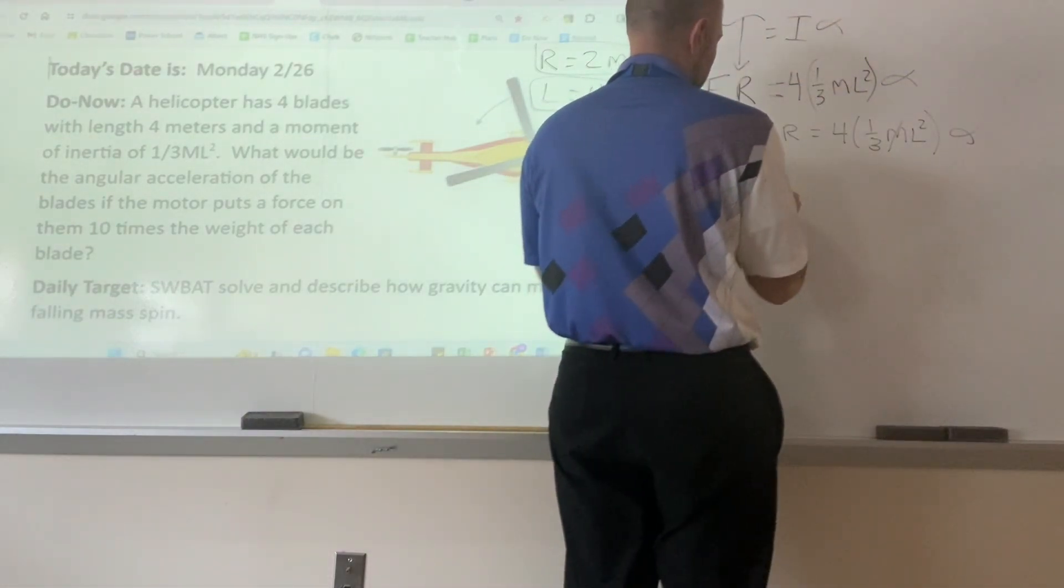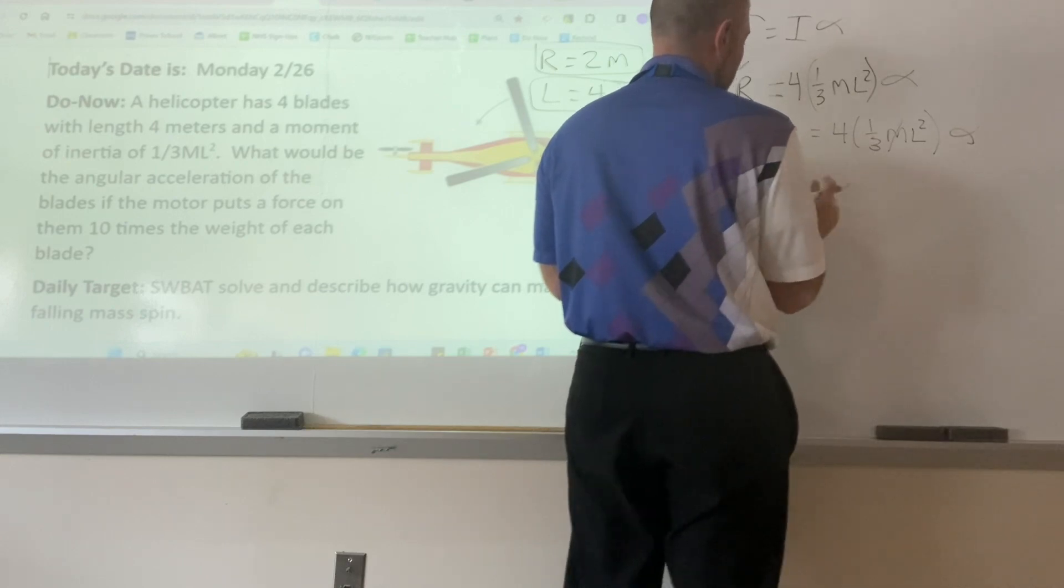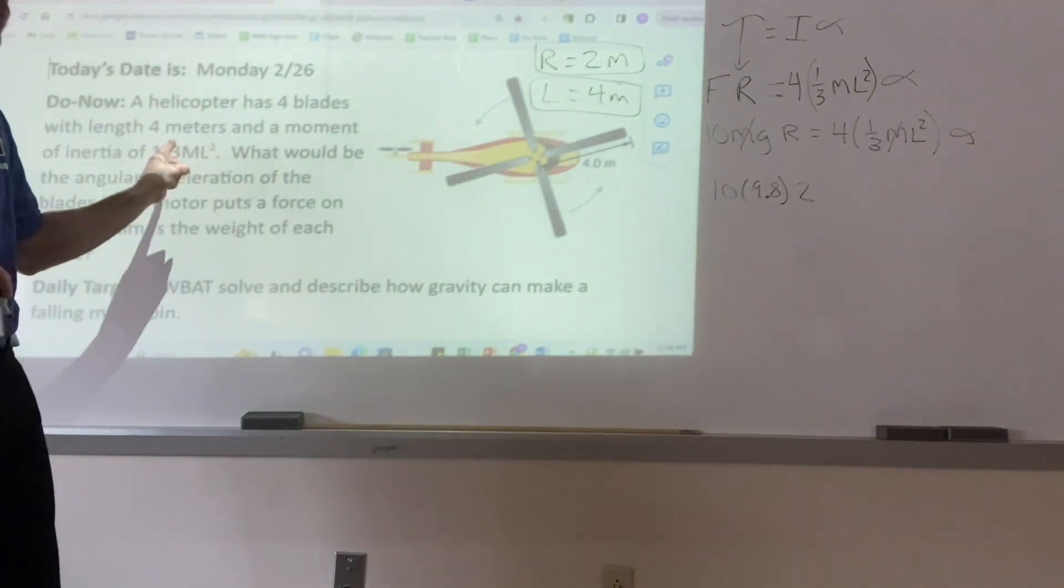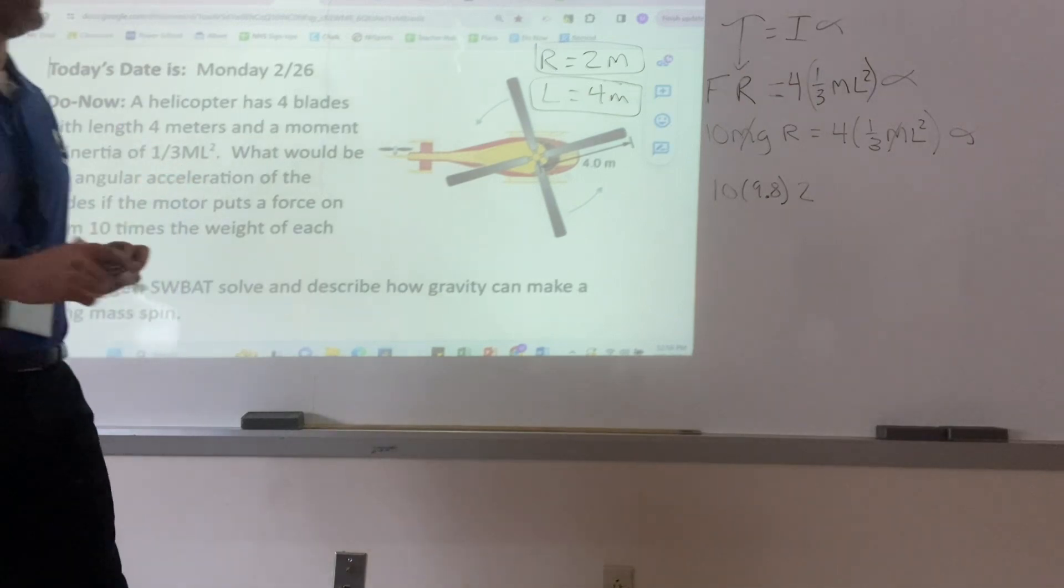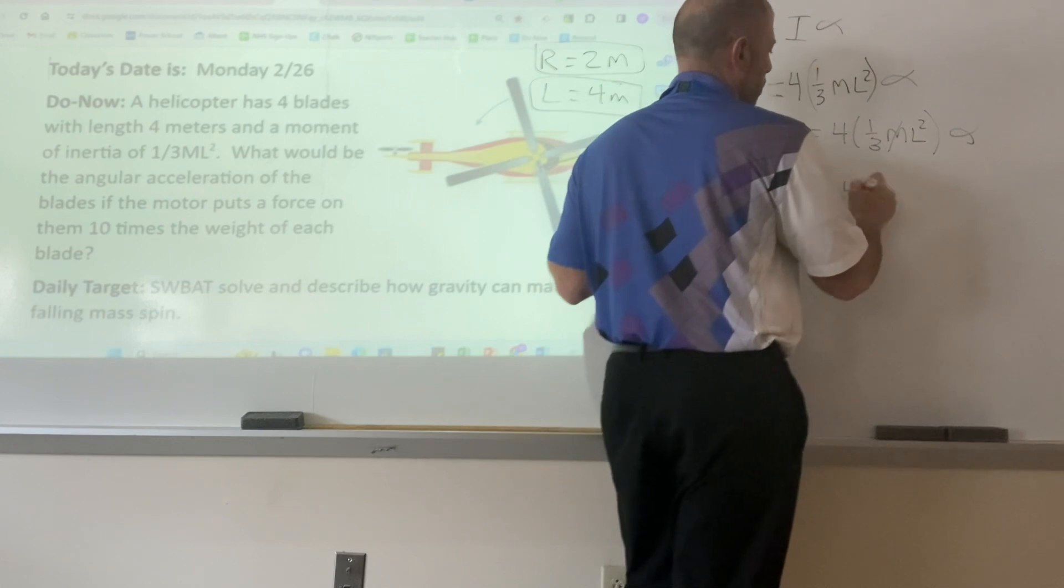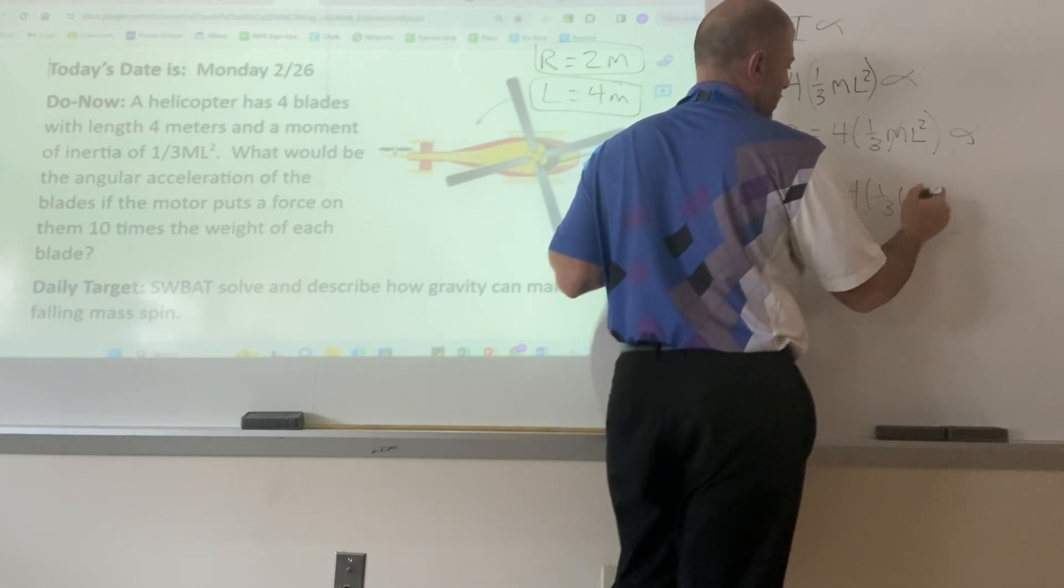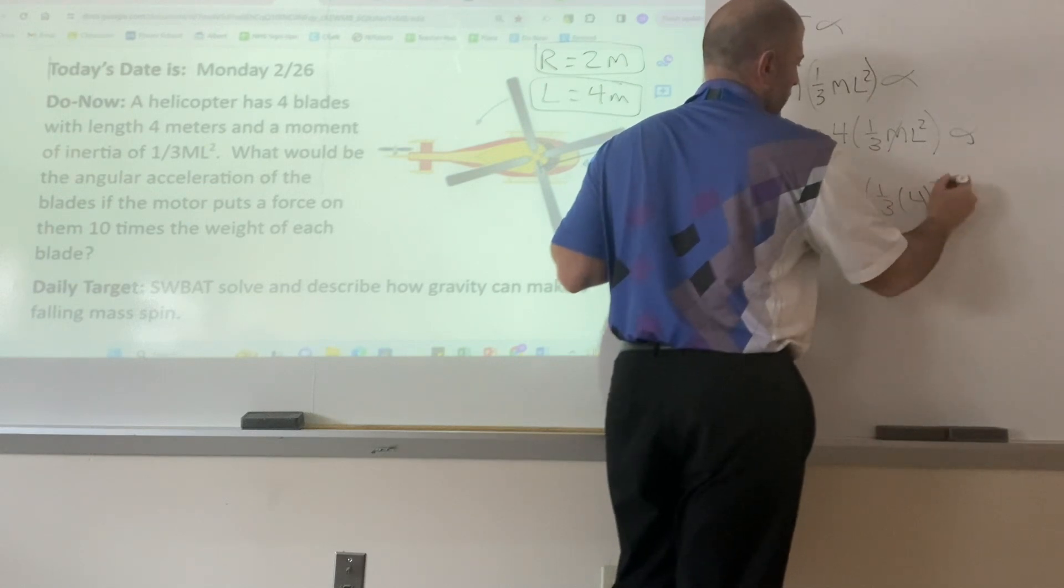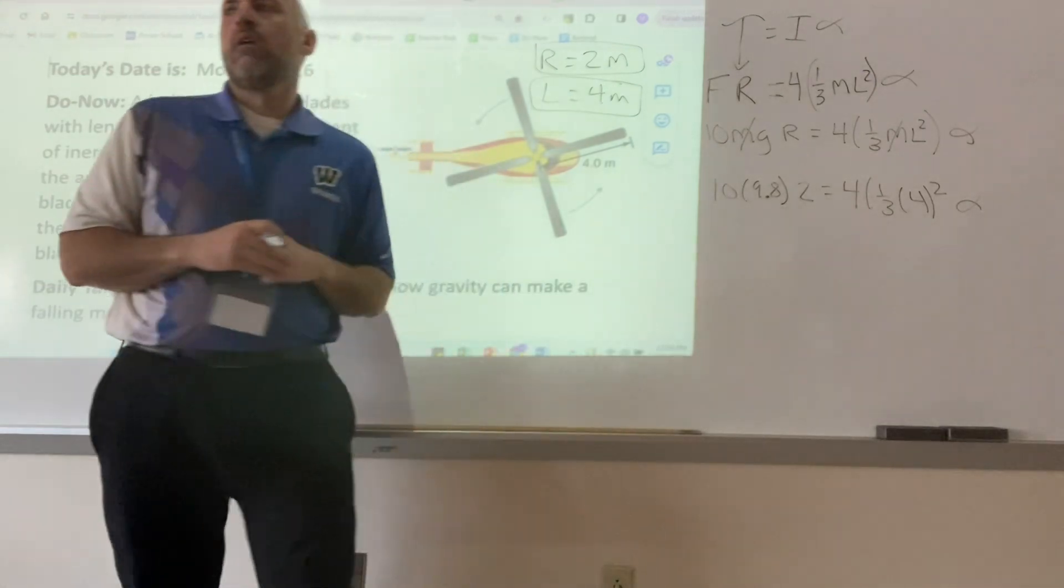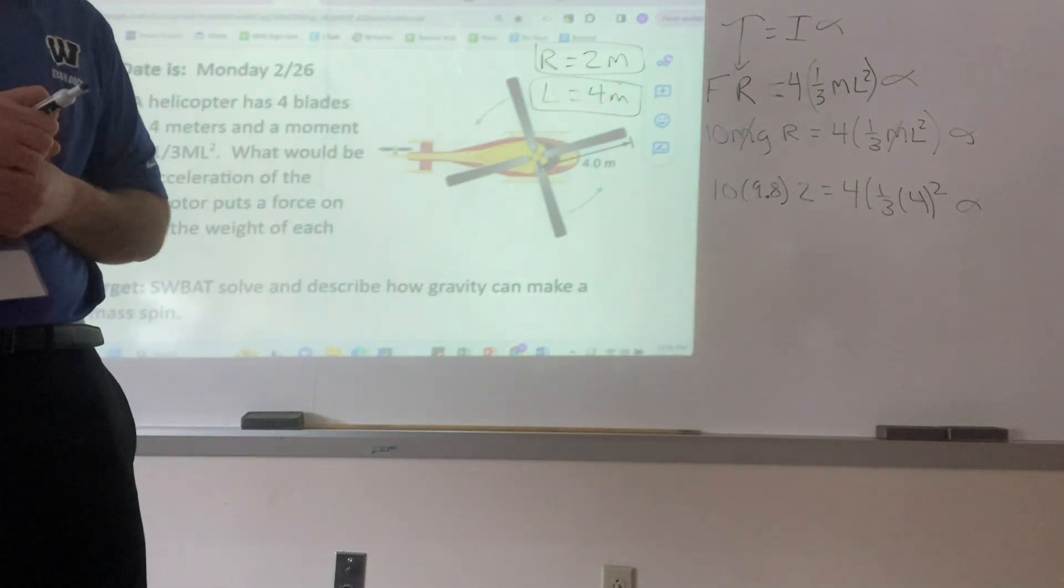So I have 10 times 9.8 times R I said is 2. I did a bad job writing this problem, especially in the video. I should have told you where that force was applied. I didn't say that. So I'm making it up and saying that R is 2 equals 4 times 1 third M cancelled out times L is 4 squared alpha, right?